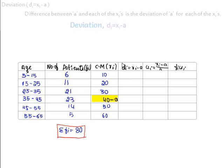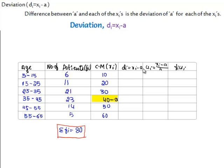Taking the deviation, that is Xi minus A, we get 10 minus 40, that is minus 30; 20 minus 40 is minus 20; 30 minus 40 is minus 10; then 0, 10, and 20.